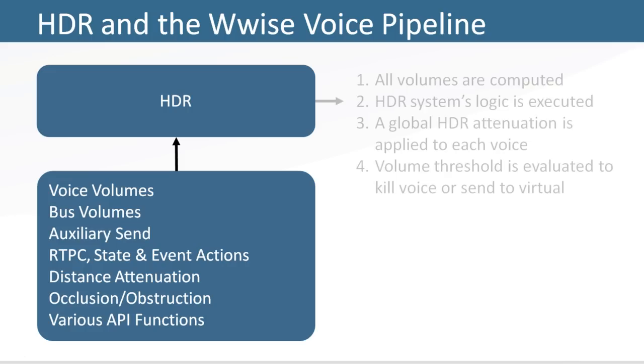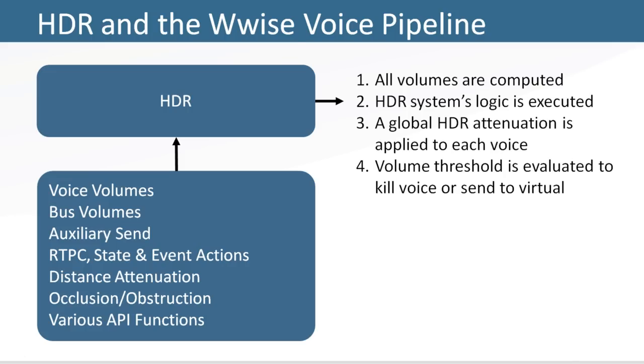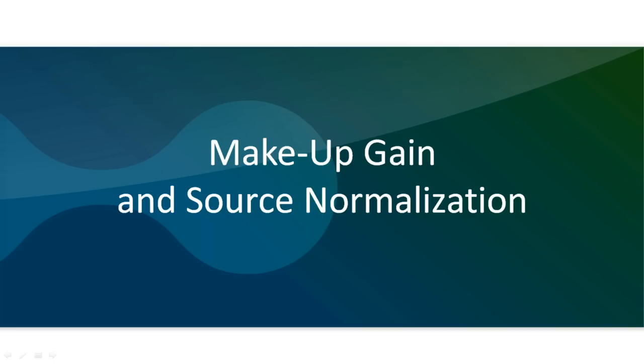At each audio frame, the sound engine begins by computing the volume of all voices as seen by the HDR bus. It then executes the HDR system's logic, which returns a global HDR gain attenuation according to the position of the HDR window. This gain is then reapplied to each voice, and WISE runs the standard volume evaluation against the project's volume threshold to decide which voices should be killed or virtualized.